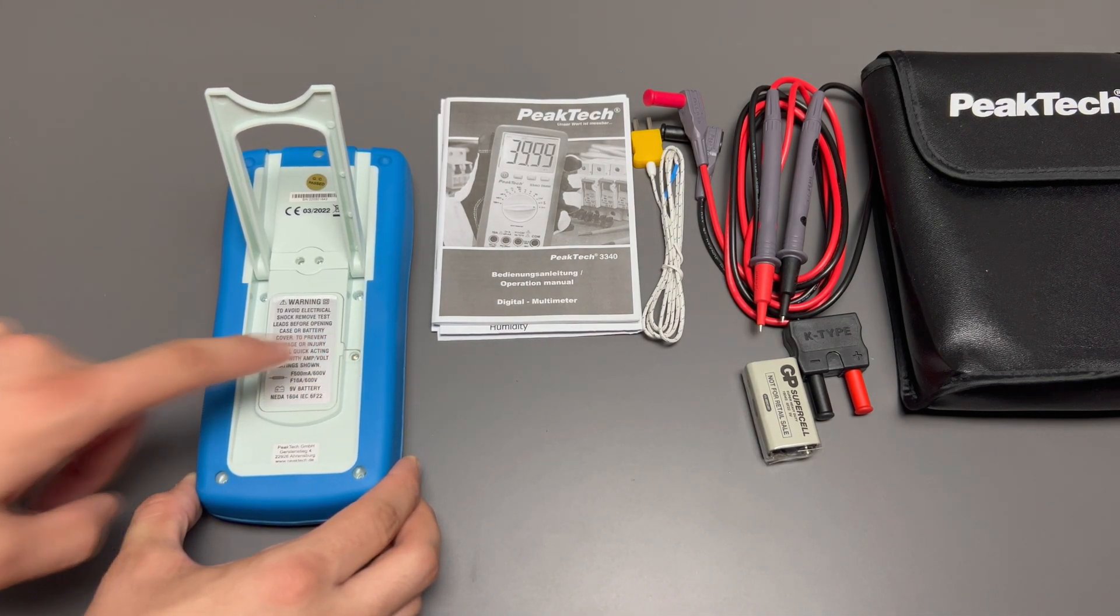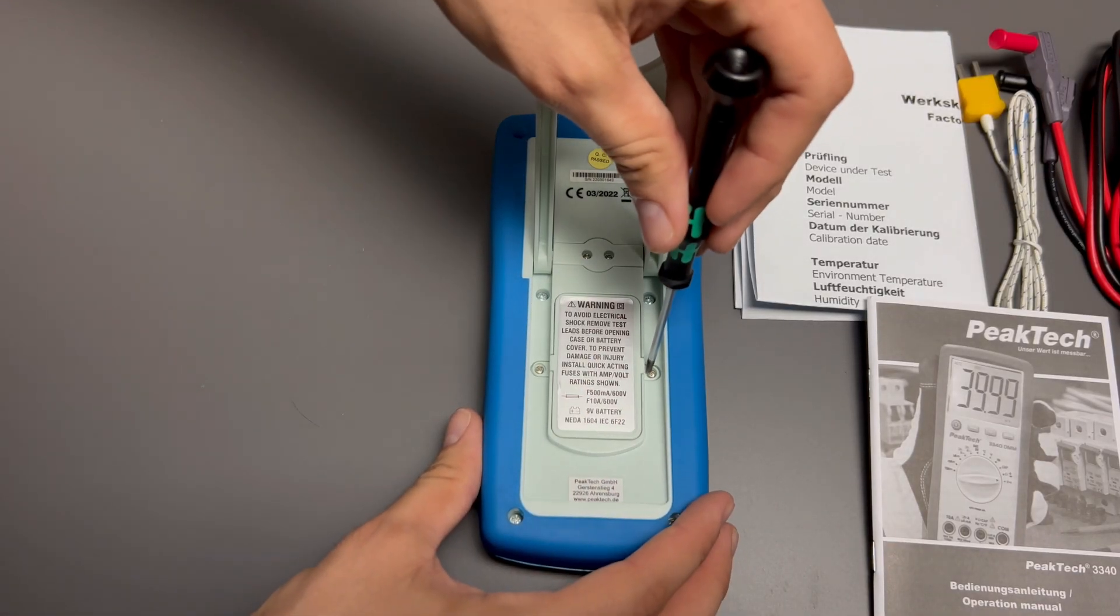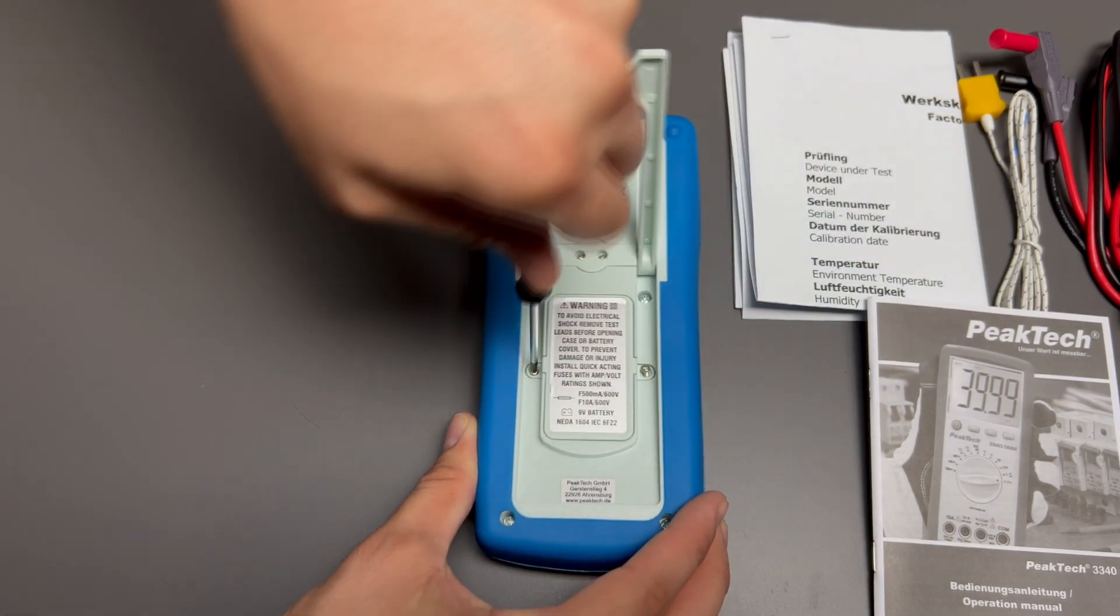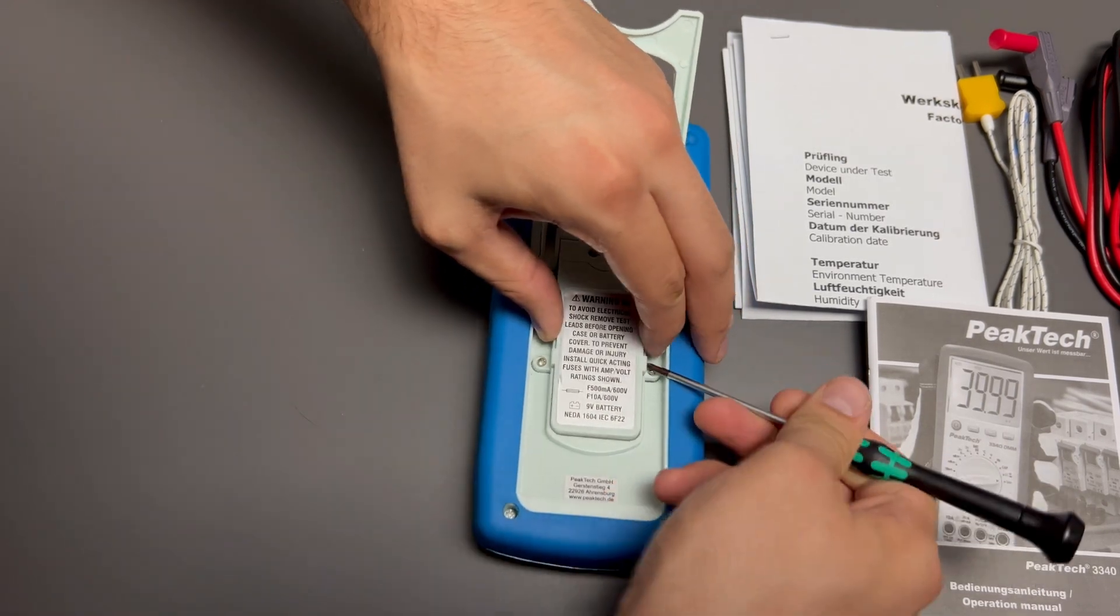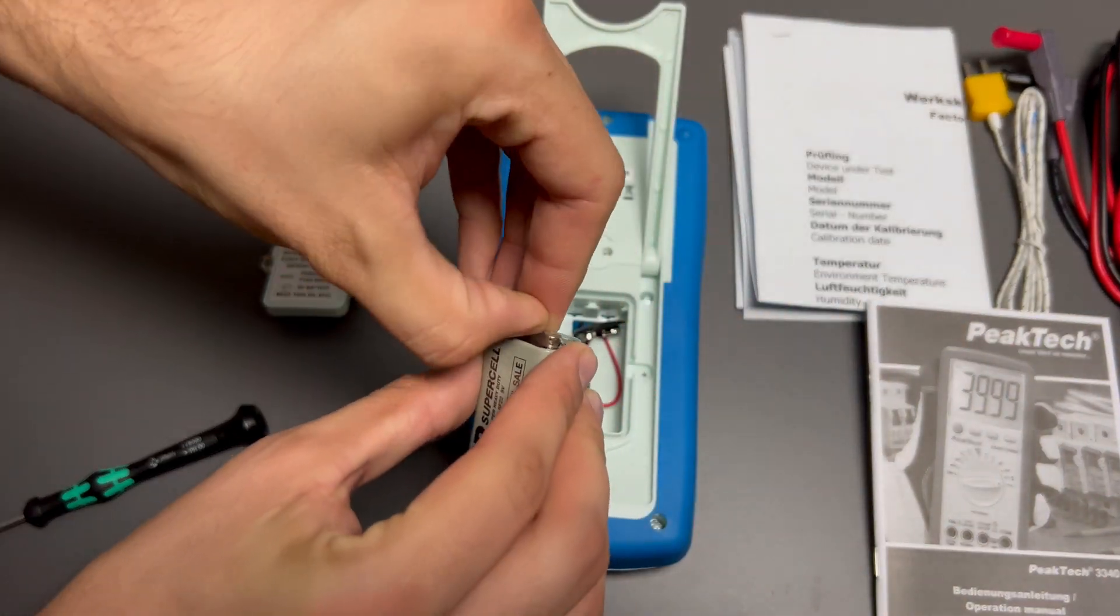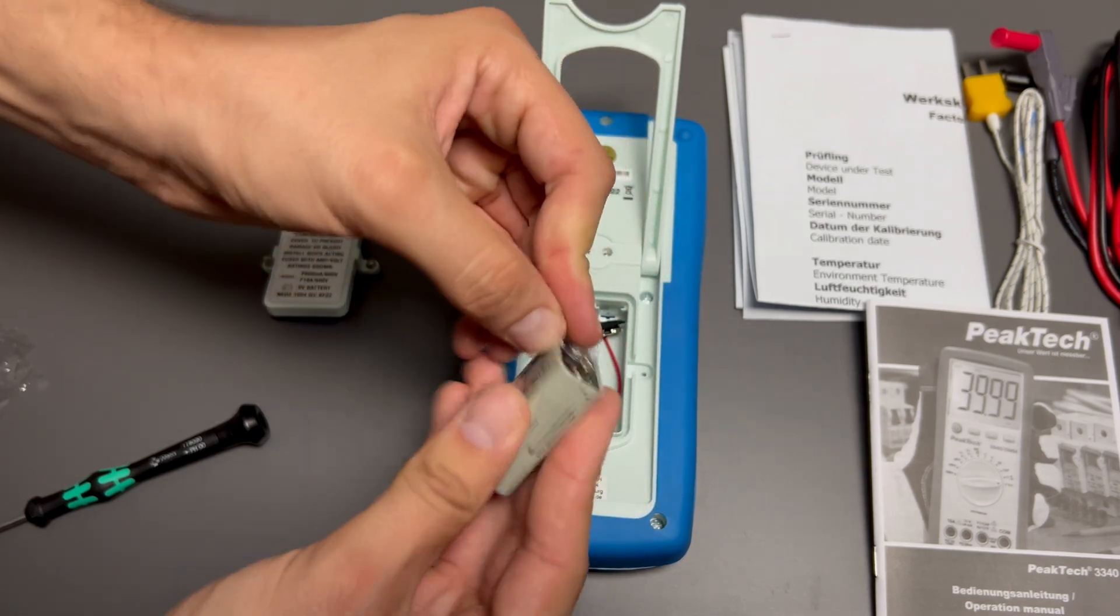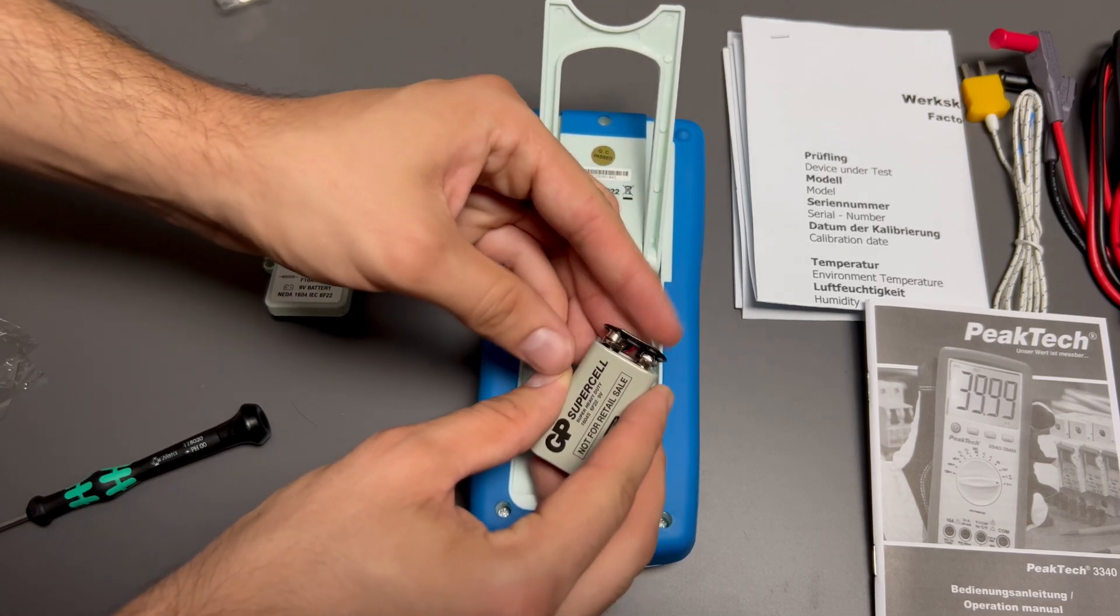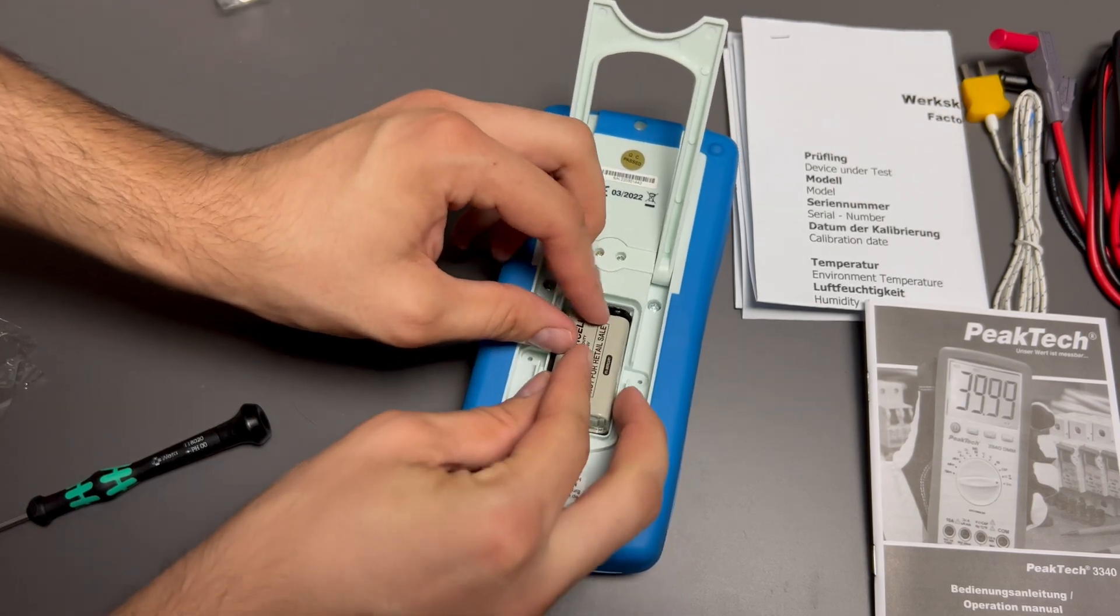These screws need to be removed to install the battery. The device uses a 9V battery. Connect the battery and close the cover.